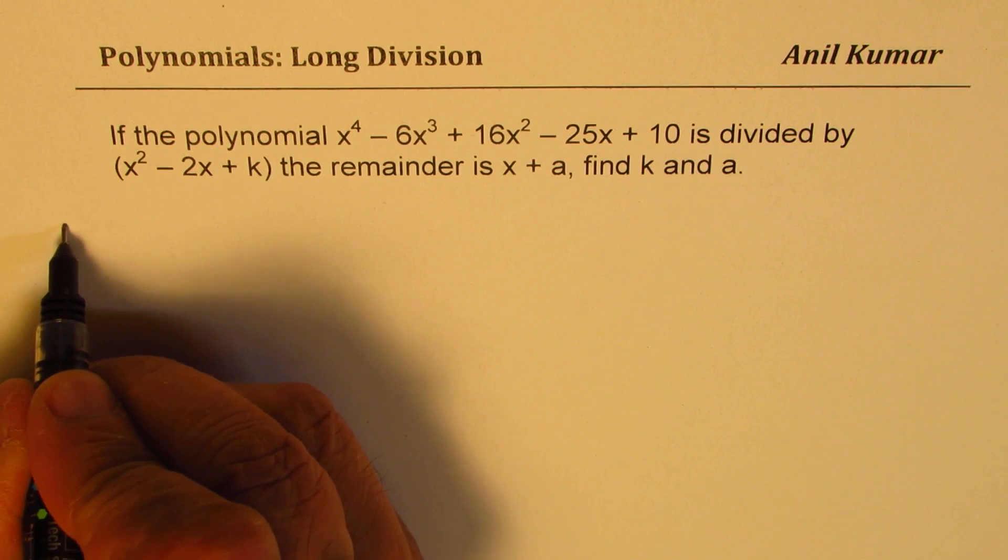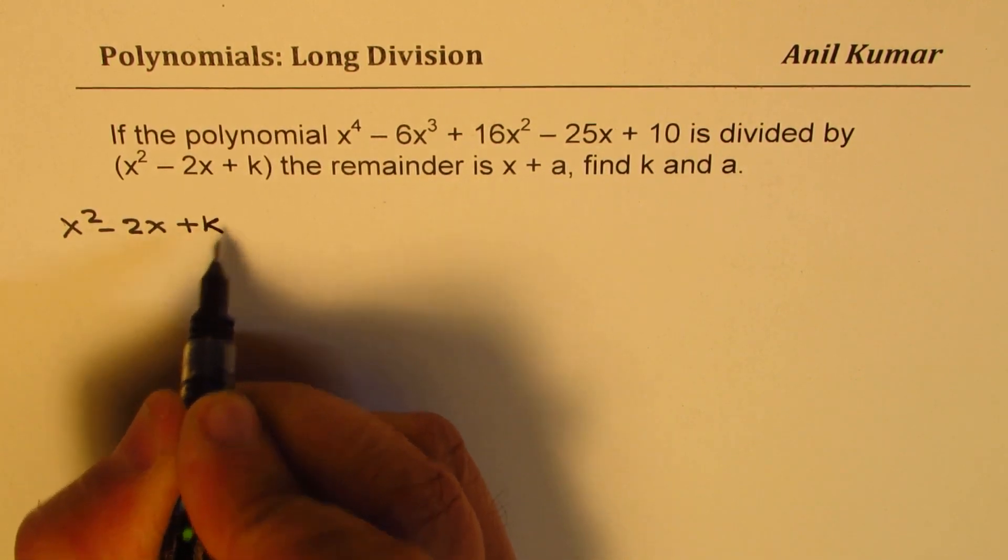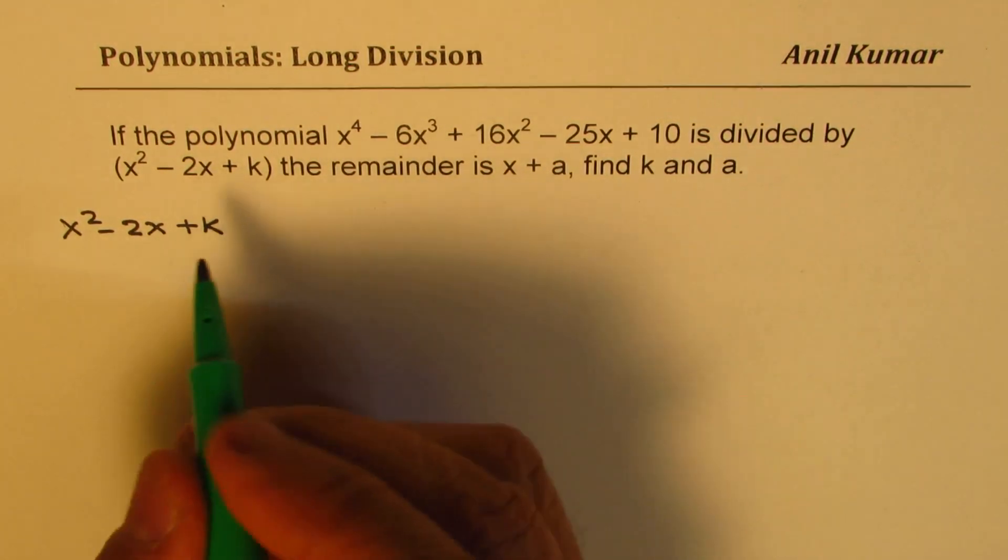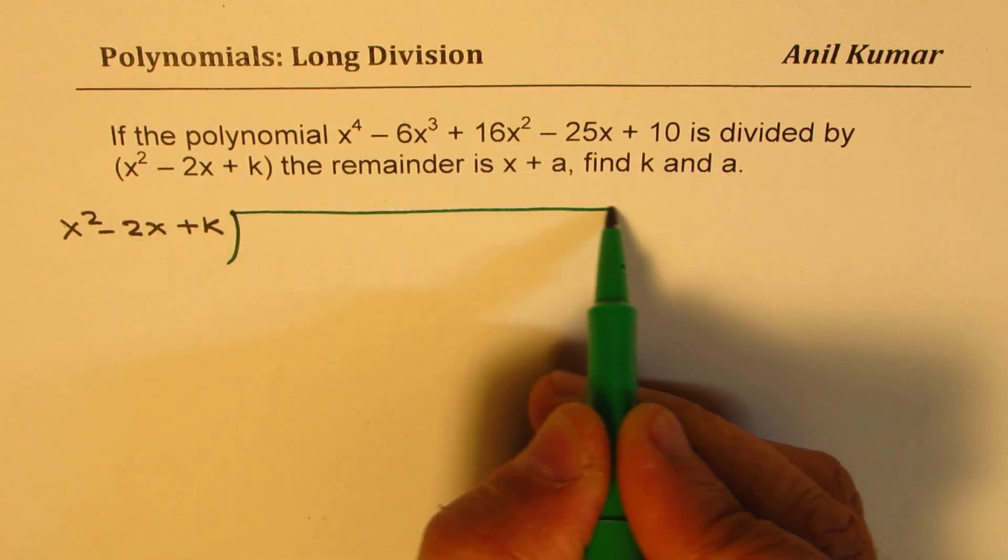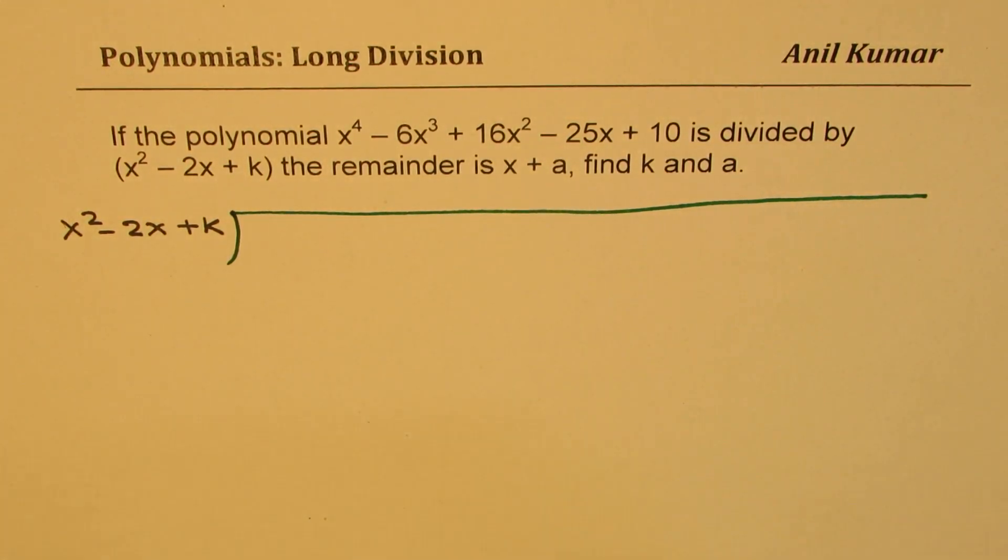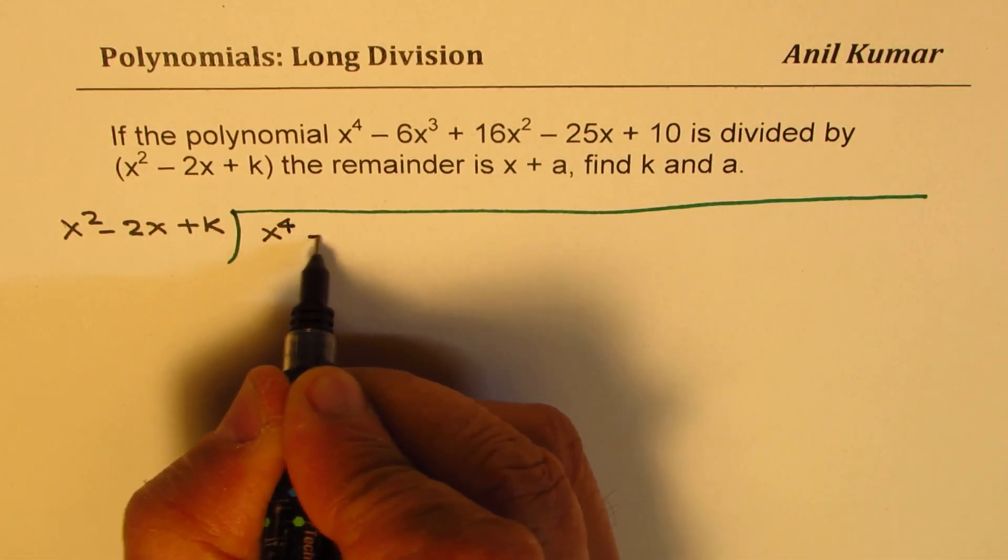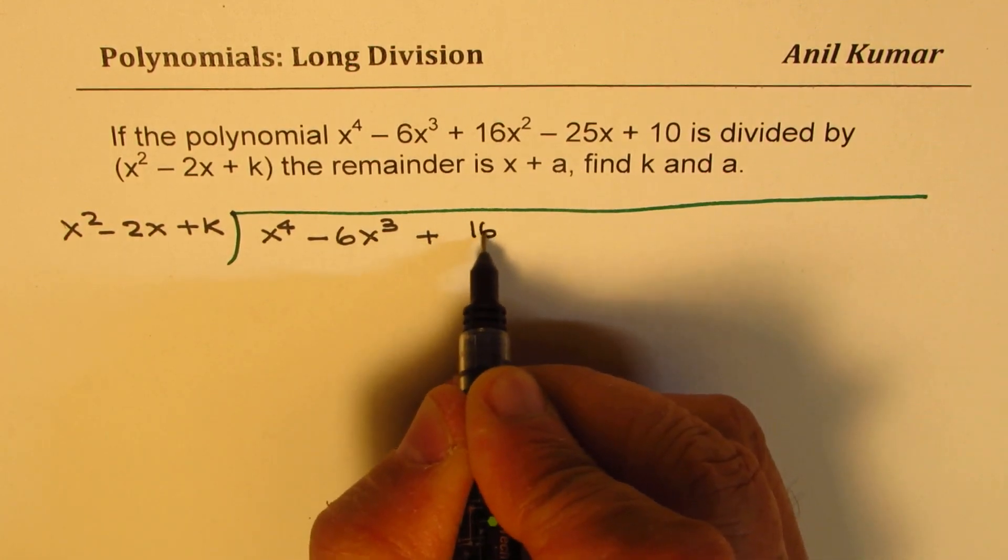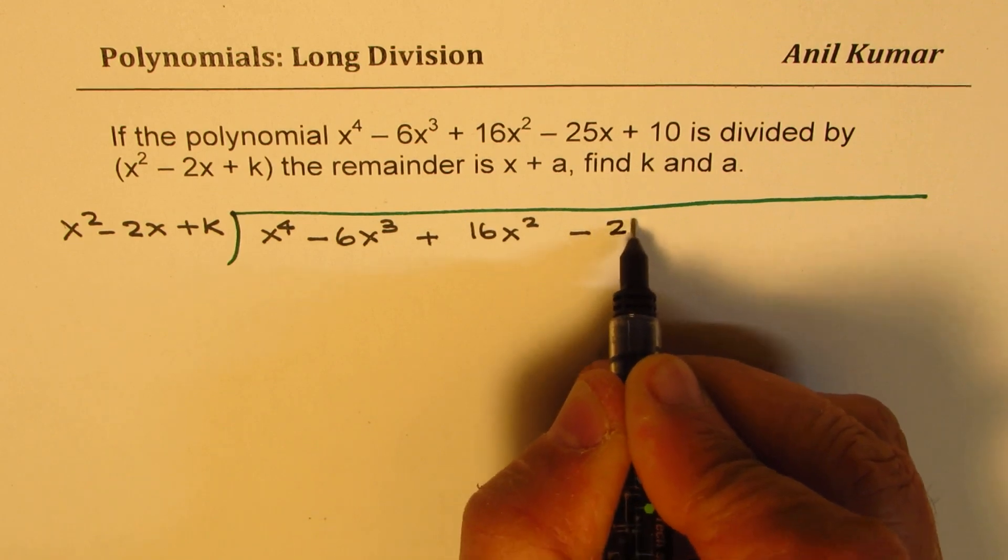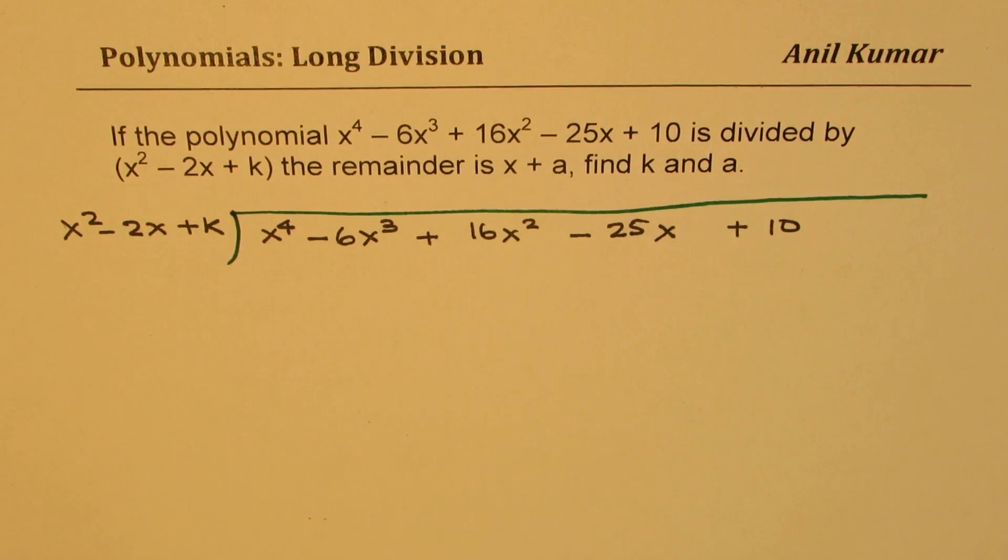So the divisor here is x^2 - 2x + k, right? And what are we dividing? We are dividing a quartic function, degree 4 function, which is x^4 - 6x^3 + 16x^2 - 25x + 10.